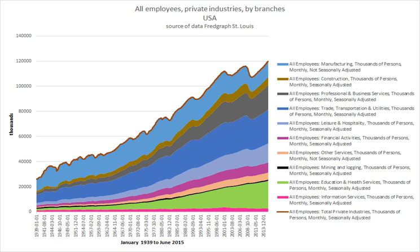There are many ways that employees are paid, including by hourly wages, by piecework, by yearly salary, or by gratuities, with the latter often being combined with another form of payment. In sales jobs and real estate positions, the employee may be paid a commission, a percentage of the value of the goods or services that they have sold.